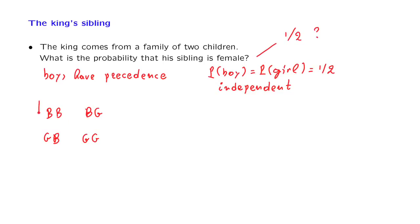Each one of these outcomes has probability 1 fourth, according to our assumptions. For example, the probability of a boy followed by a boy is 1 half times 1 half, where we're also using independence.